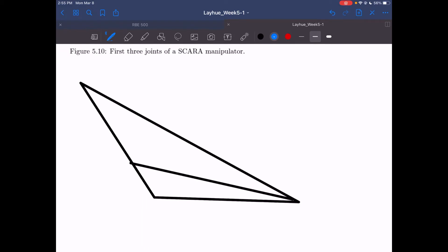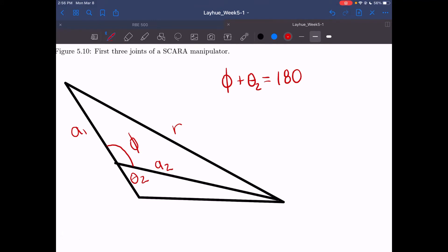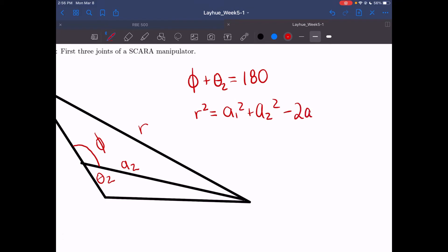If we add some notation, this is our theta2. This length is our a1. This is our a2. This is r. And this is some angle that we will denote as phi. Now if we see, phi and theta2 can add up to 180 degrees. This will be very useful in helping us solve explicitly for theta2.